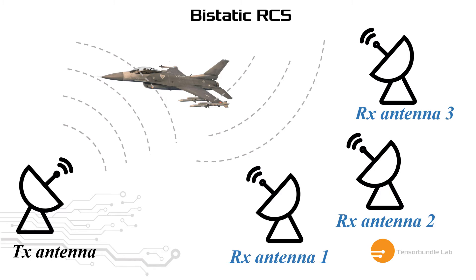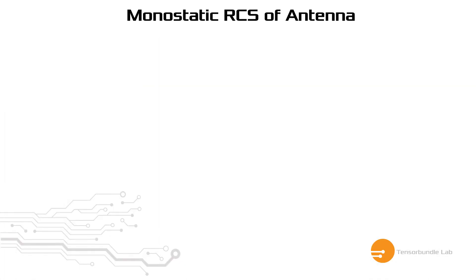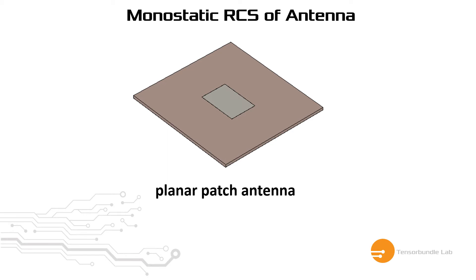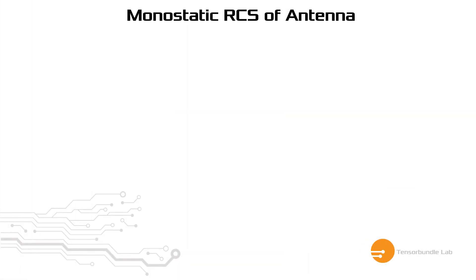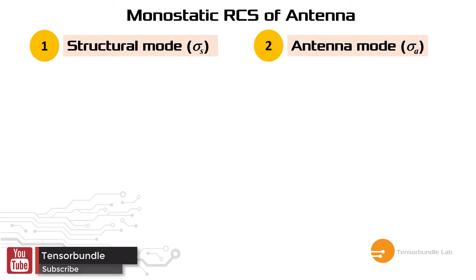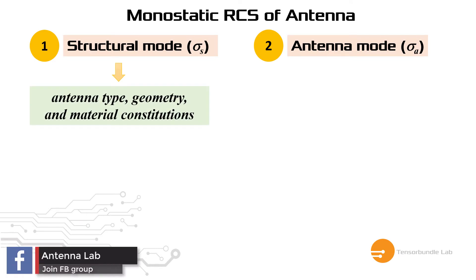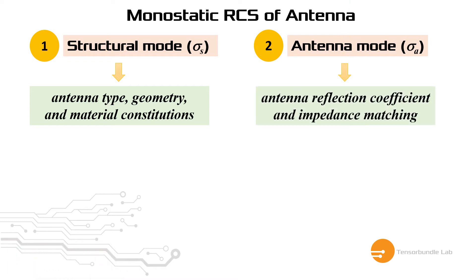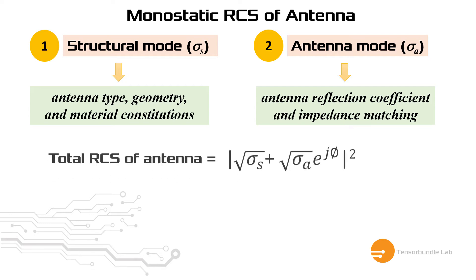The monostatic RCS of an antenna is kind of different from the normal RCS concept. For example, if we have a planar patch antenna or any antenna, then we can define the monostatic RCS of the antenna in terms of two components. The first one is the structural mode RCS, normally expressed by Sigma S. The second one is the antenna mode RCS, defined by Sigma A. The total monostatic RCS of the antenna can be expressed by a single closed-form equation, where phi is the phase difference between the two modes.